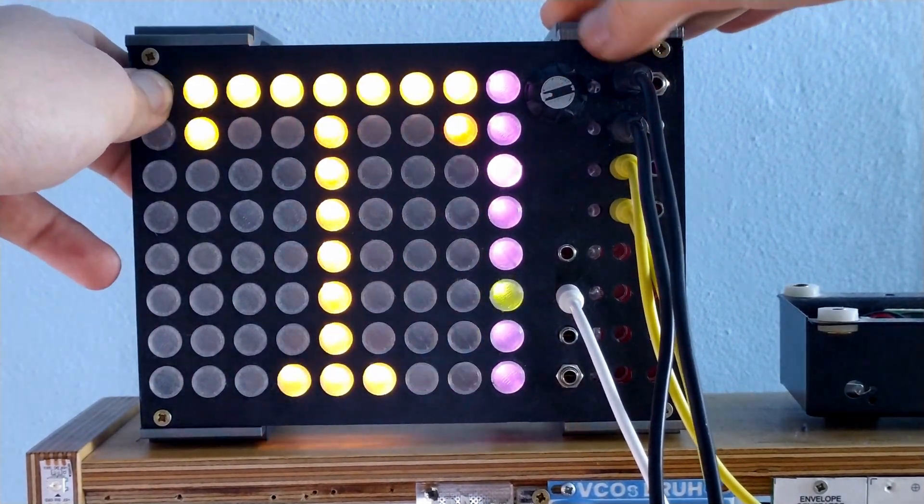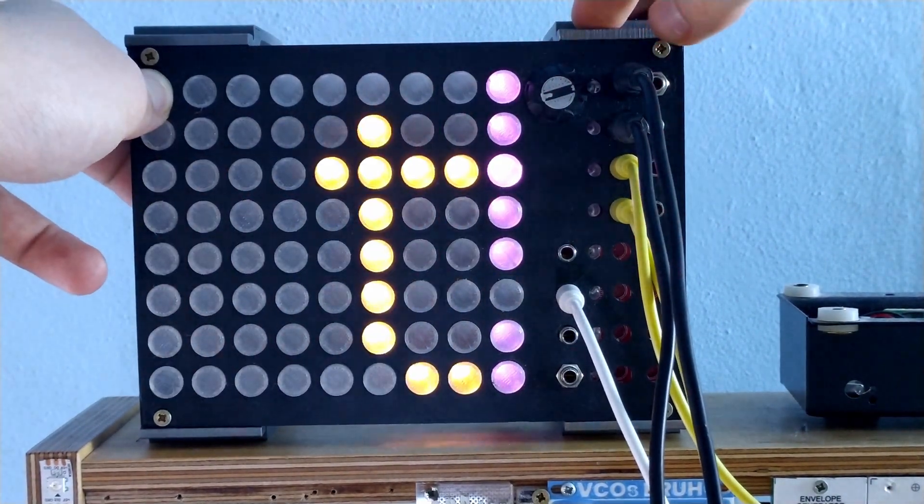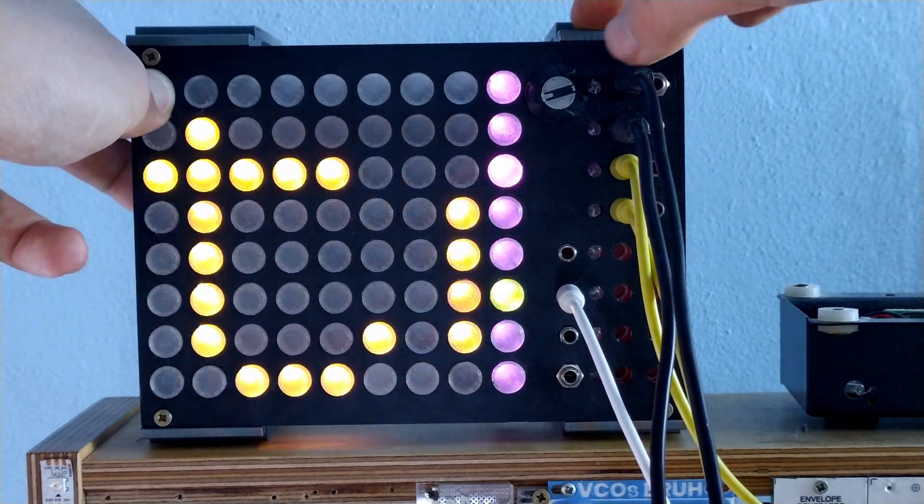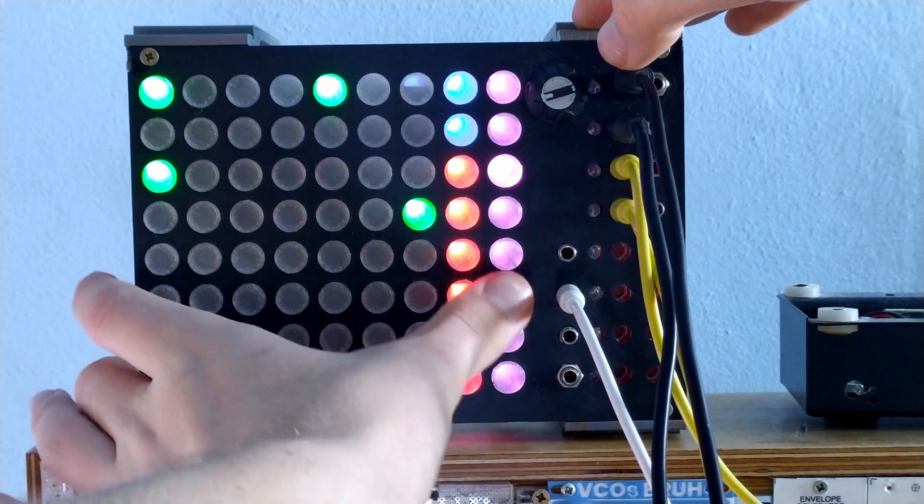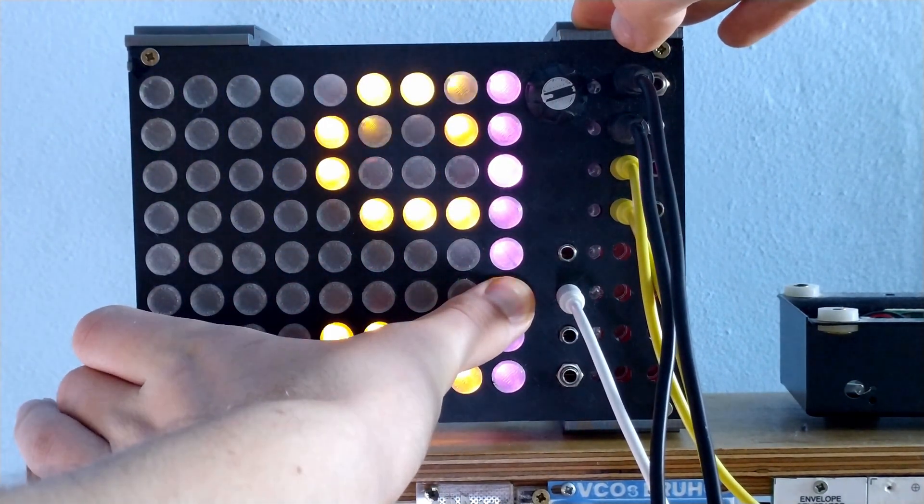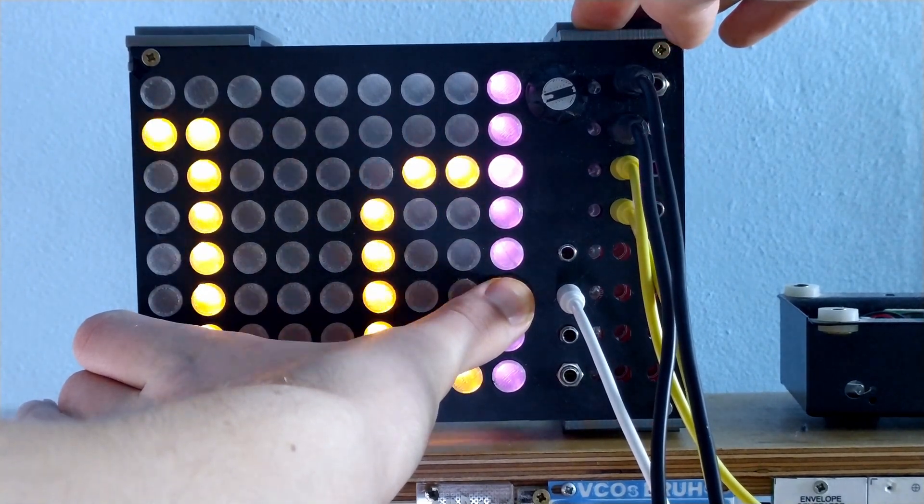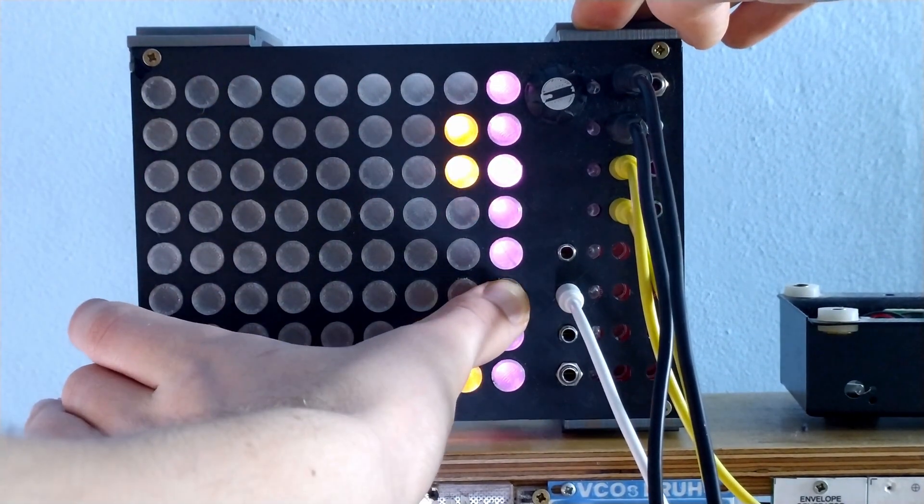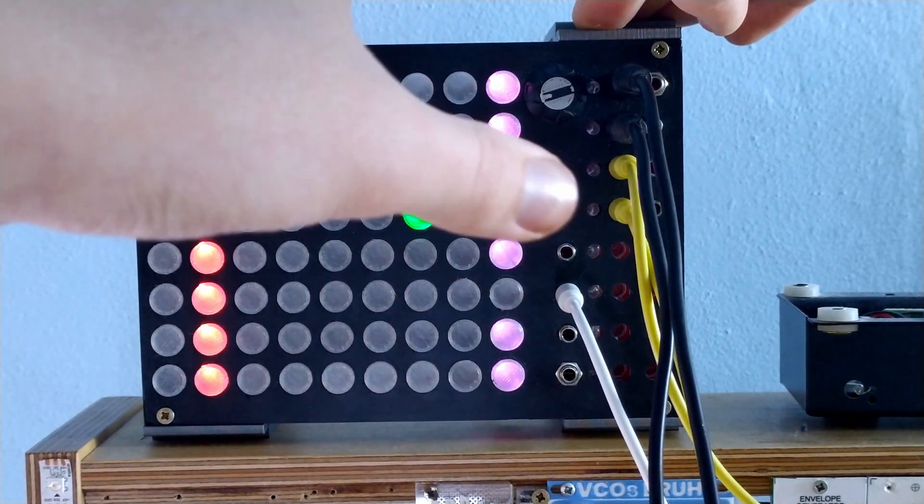So any button that has any function and you're not quite sure how to use it, you can just hold it down and it will tell you what the button does. So this says toggle this step. I don't know, let's press and hold this button down. It says stop clock.